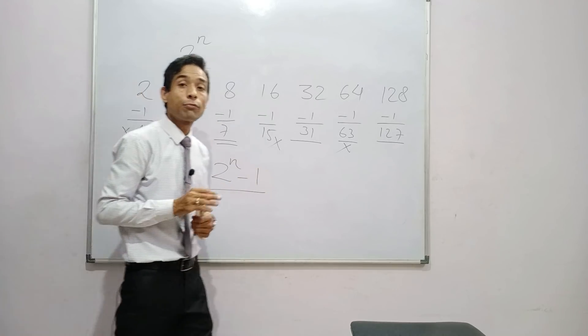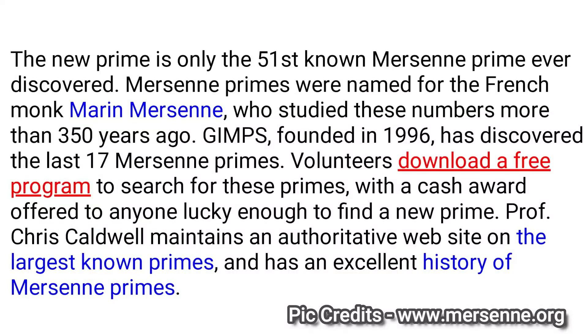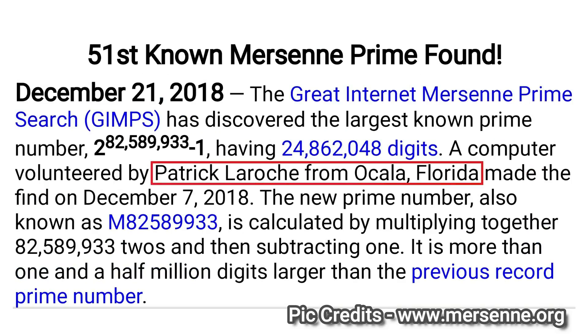Up till now, there are 51 Mersenne prime numbers known till date. The last was found out in December 2018 by an IT professional, Patrick Laroche, from Ocala, Florida.